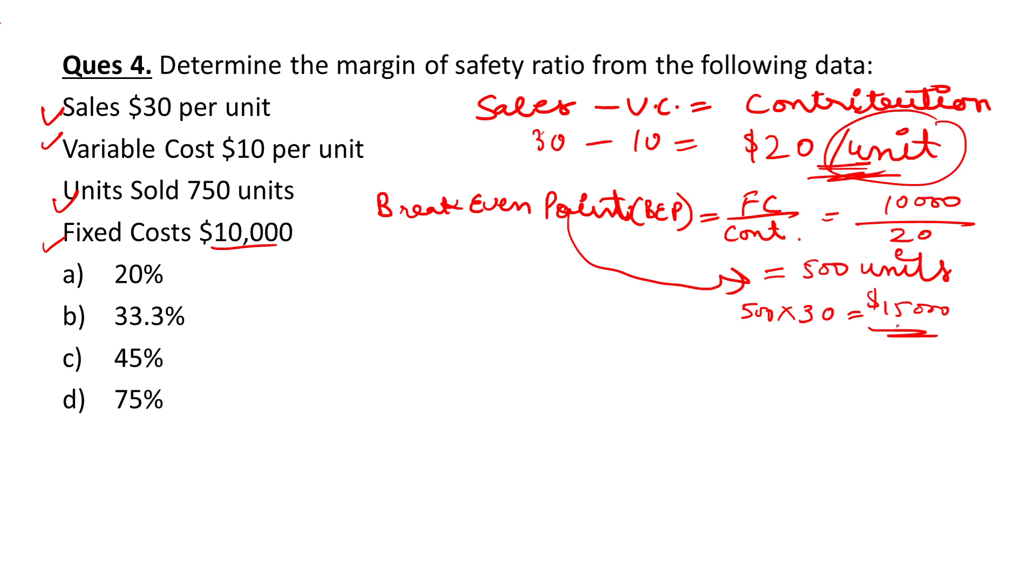Now margin of safety, very simple to calculate. The margin of safety: 750 is the number of units sold and $30 per unit.